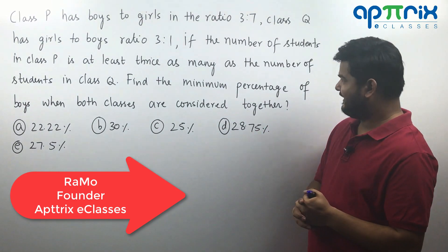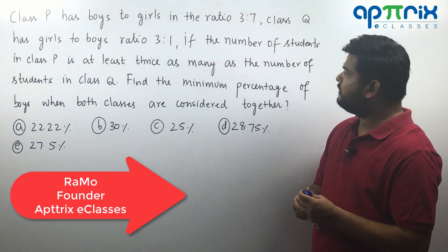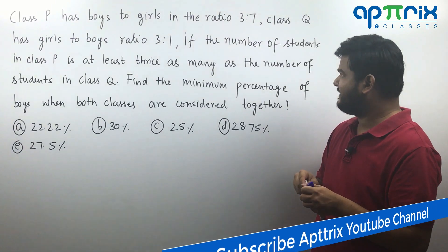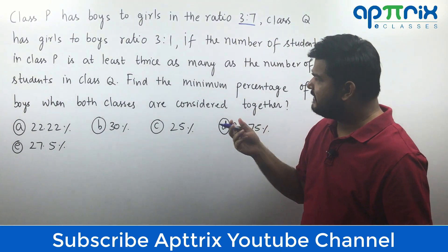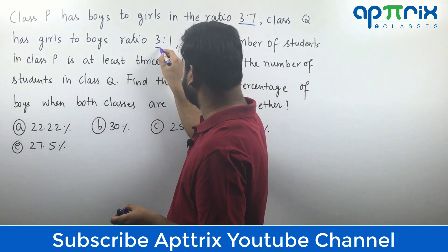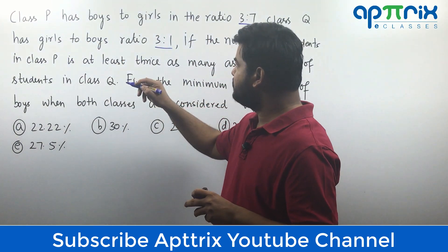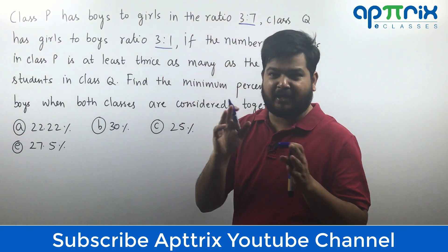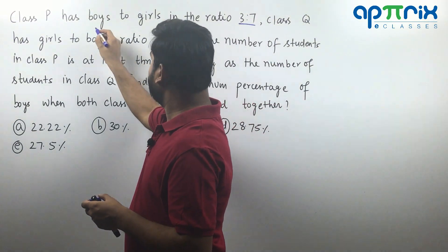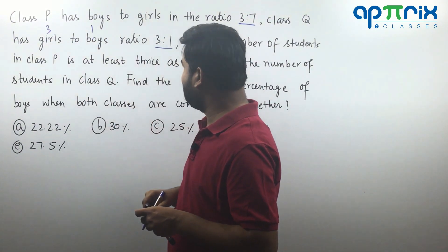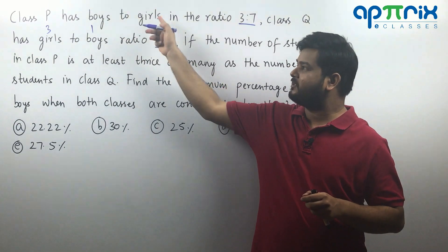Let us read this question. Class P has boys to girls in the ratio 3:7. Class Q has girls to boys ratio of 3:1. You need to be very attentive — this is boys to girls and this is girls to boys. So it is important that you do not make mistakes in the exam. Write it clearly so that boys to girls ratio in class Q will be 1:3.